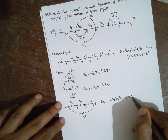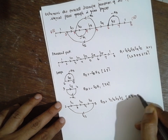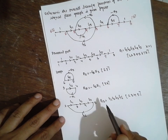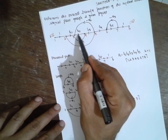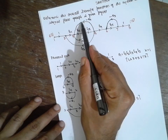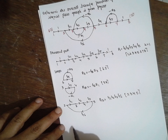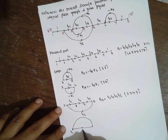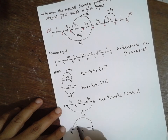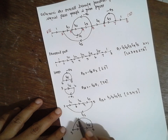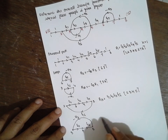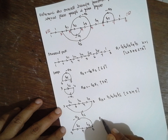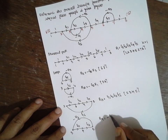The next loop, P14, starts at node 3, going through nodes 3, 4, 5 and back to 3, with gains G2, G3, and minus H2. Therefore, P14 is equal to minus G2 · G3 · H2. Apart from this one, there are no other loops.